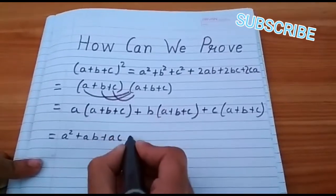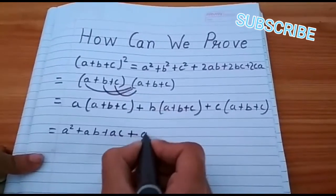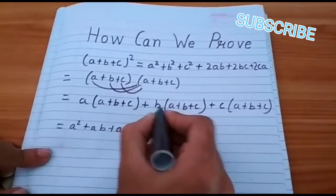Then here, give plus symbol first. Then a into b equal to ab. Then b into b.